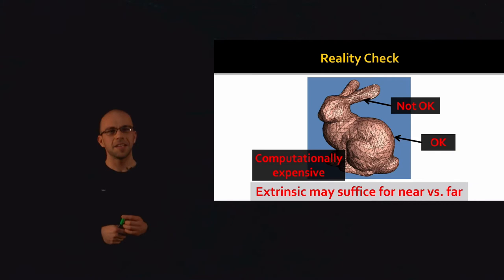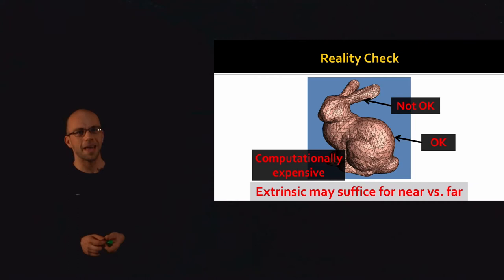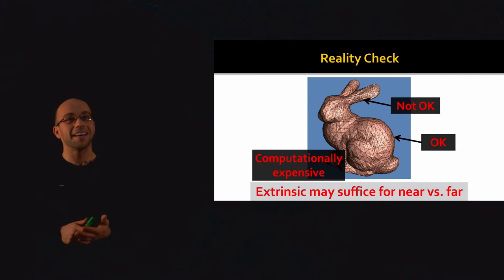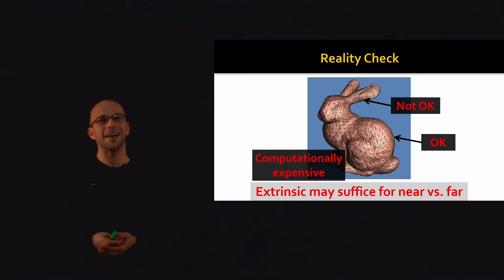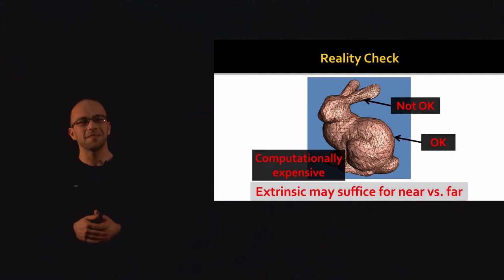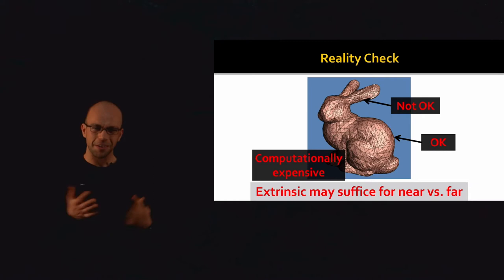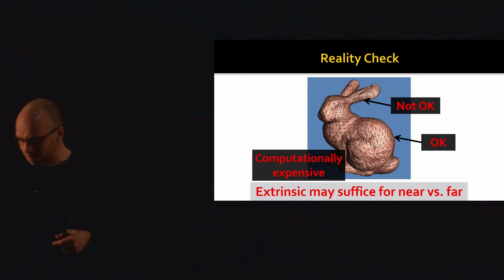For some applications, a simpler approximation might suffice. On the bunny, extrinsic distances in 3D — the length of straight lines — are actually pretty good approximations to geodesic distances, especially in low-curvature regions like his back. But on the bunny's ears, which are similar to the cat paws, intrinsic and extrinsic structure are quite far apart. As engineers at MIT, we have to decide whether it's worth the computational expense of computing geodesic distances, since some applications demand it, while for others the extrinsic approximation is faster and still reasonable.